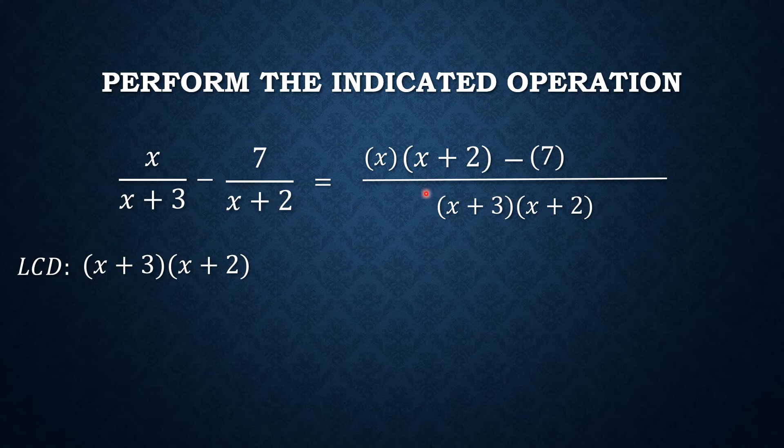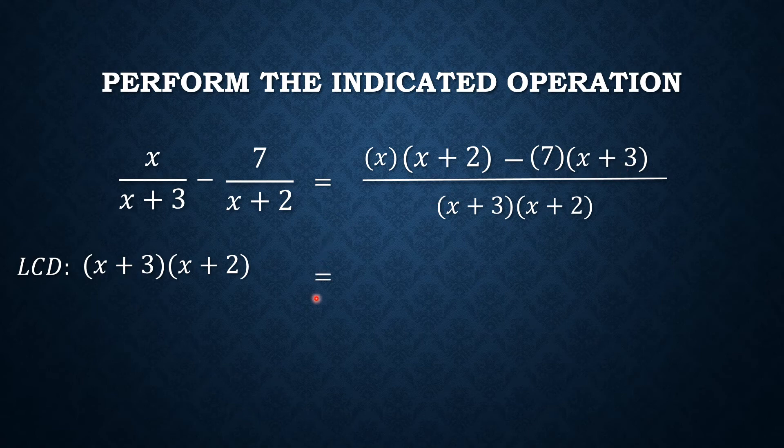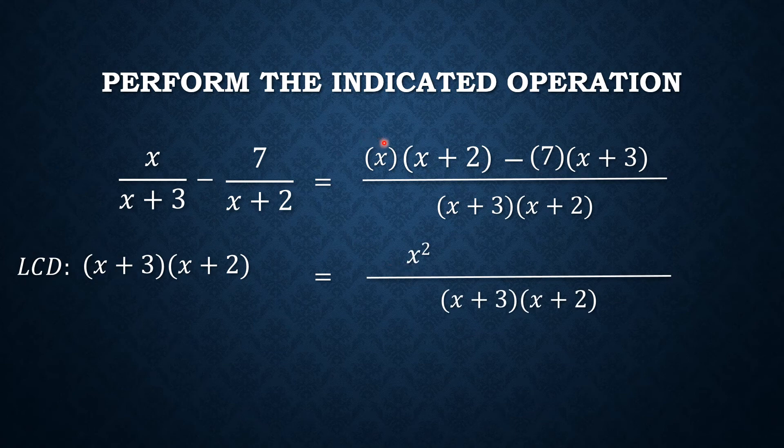We get x plus 3. So now, let's multiply this. x times x is x squared. x times 2, 2x. Negative 7 times x, negative 7x. And then negative 7 times positive 3 is negative 21.